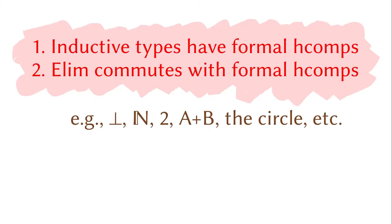In sum, the most crucial change to the inductive types in cubical type theory is to add formal homogeneous compositions and make eliminators commute with them. This applies to the empty type, the natural number type, the boolean type, the disjoint sums, the circle, etc.